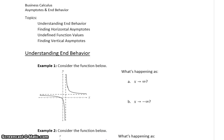In this section, we want to take a look at how limits can be used to identify asymptotes, both horizontal and vertical, as well as tell us about the end behavior of a function.